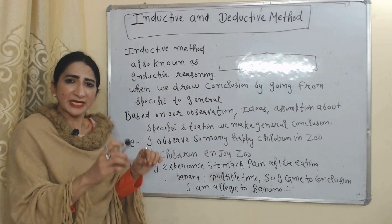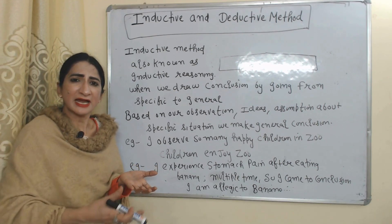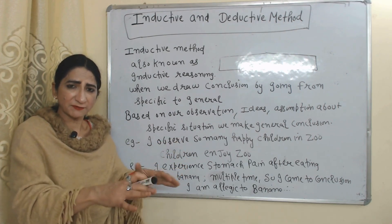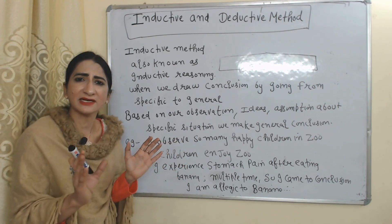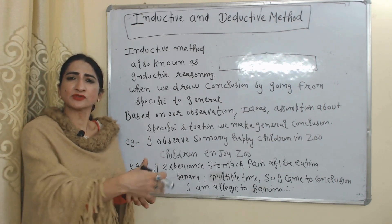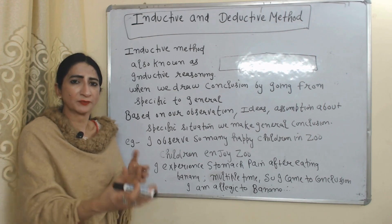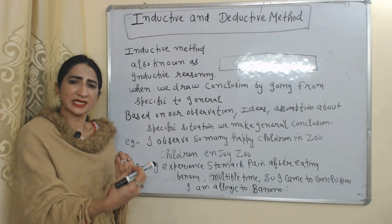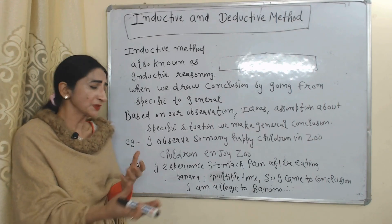Based on our observation, assumption, and experience about a specific situation, we make a general conclusion. For example, I observe so many happy children in a zoo. Based on my observation, I came to one conclusion: children enjoy a zoo.